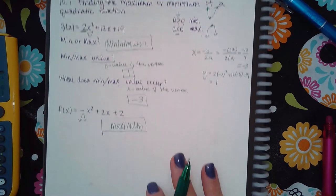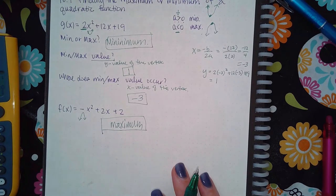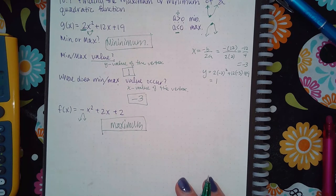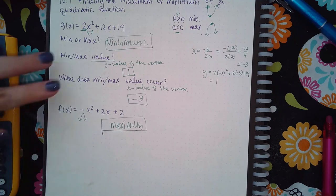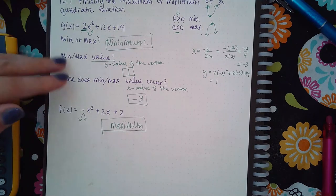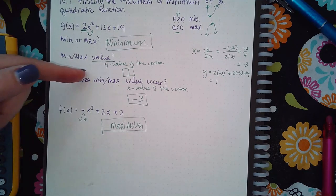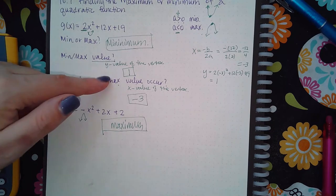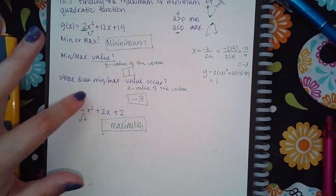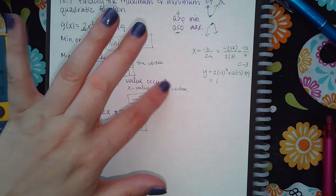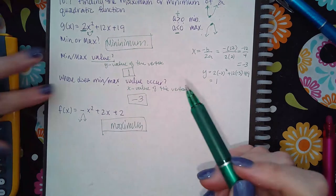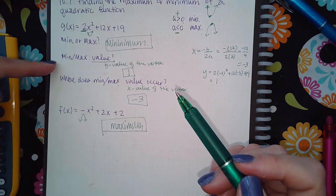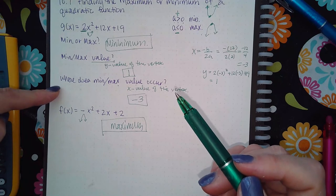If I want to know the minimum or maximum value and where it occurs, I need to do the x equals negative b over 2a. Now sometimes they will switch the order of these, so make sure you're paying attention to the min or max value, which is the y, or where the minimum maximum value occurs, that would be the x value of the vertex. Pay very special attention to these wordings because they will switch them.